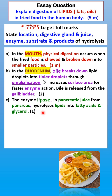Again in the duodenum, the enzyme lipase in pancreatic juice from the pancreas hydrolyses lipids into fatty acids and glycerol. In our syllabus we only study one enzyme for lipids, and that is lipase. Lipase is produced by the pancreas, found in pancreatic juice, and hydrolyses lipids into the final products of digestion: fatty acids and glycerol — one mark.